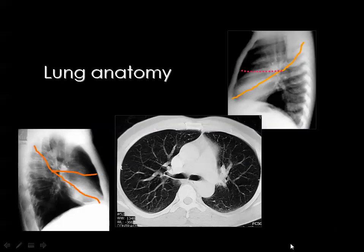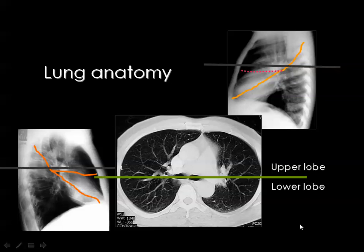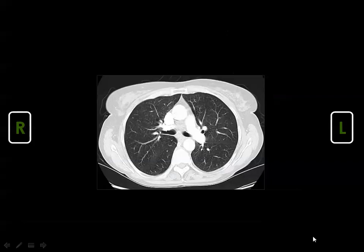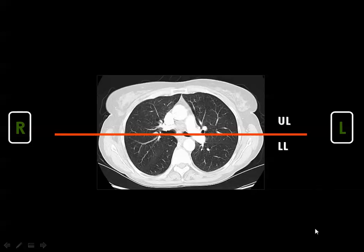When the trachea divides into two mainstem bronchi, you are near the hilum, and the section divides into two. On the left side you see part of the upper lobe anteriorly and part of the lower lobe posteriorly; the same on the right. At the CT section level of tracheal bifurcation, the anterior portion is the upper lobe and the posterior portion is the lower lobe.